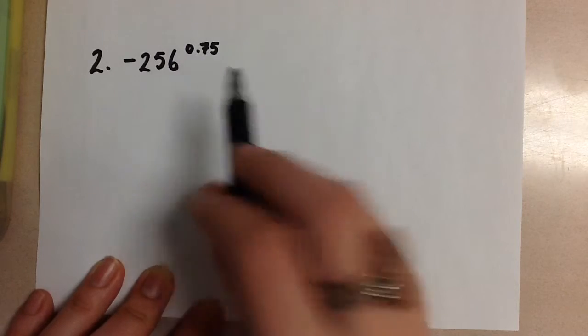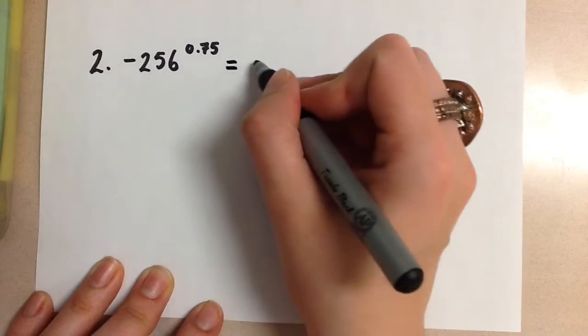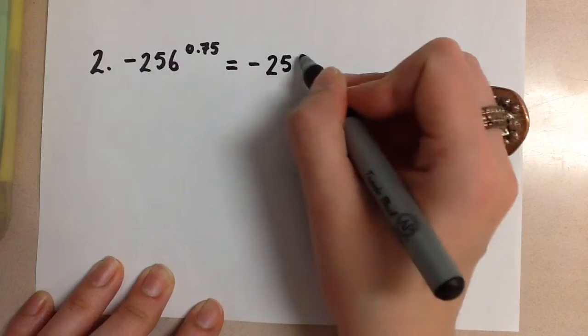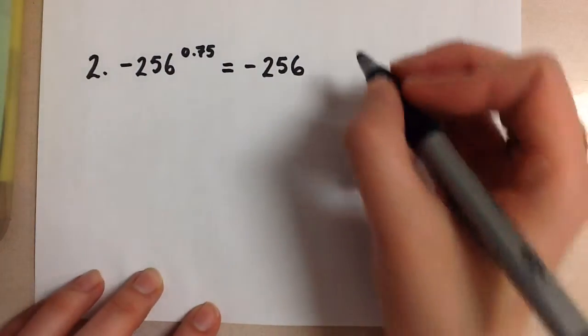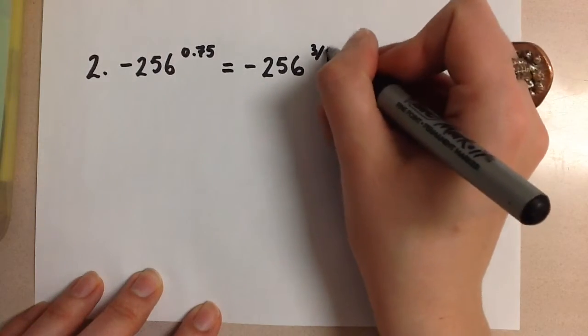This exponent is written as a decimal. Let's rewrite that as a fraction so that we can approach it in the same way that we did the last problem. 0.75 can be written as 3 over 4.